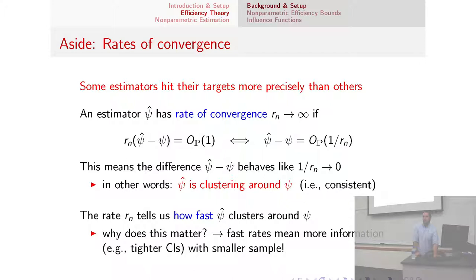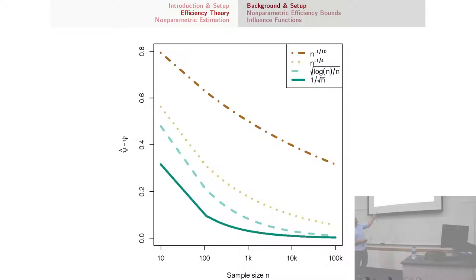Here's a plot of some typical convergence rates. On the x-axis we have sample size. Large sample sizes, an extra log factor doesn't seem to matter too much. We have the n-to-the-quarter rate, another common rate. If you look at the error for an n-to-the-quarter convergence rate estimator at a sample size of something like 10,000, it looks like the error for a root-n consistent estimator at a sample size of a couple hundred. So this is what having a faster convergence rate buys us — we can get the same information out of a few hundred samples as we would from 10,000 samples with a slower convergence rate estimator.